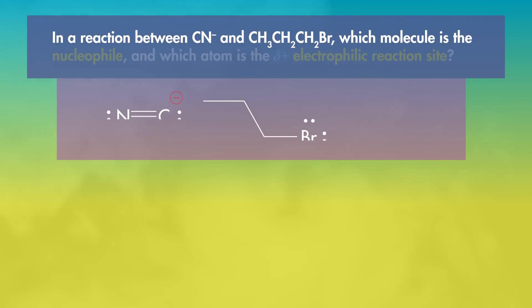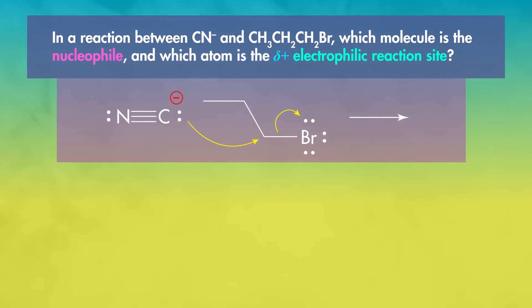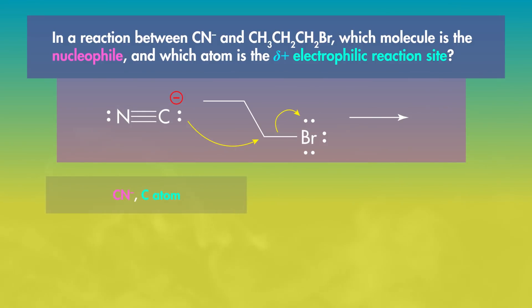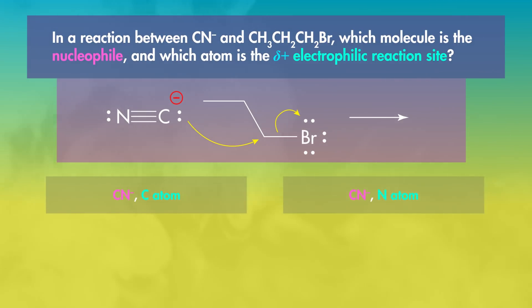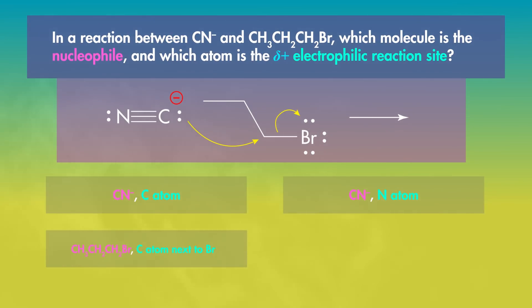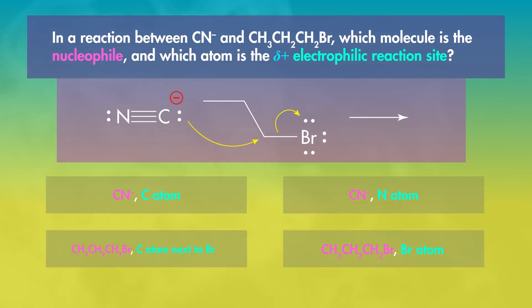Let's apply these definitions — this will also give you some practice drawing structures and arrows. In a reaction between cyanide and 1-bromopropane, which molecule is the nucleophile and which atom is the specific δ⁺ electrophilic reaction site? Options: cyanide and the carbon atom; cyanide and the nitrogen atom; bromopropane and the carbon atom next to the bromine; or bromopropane and the bromine atom.